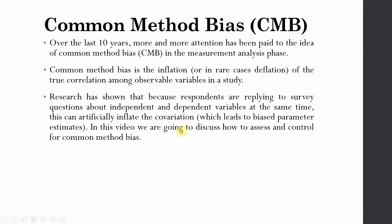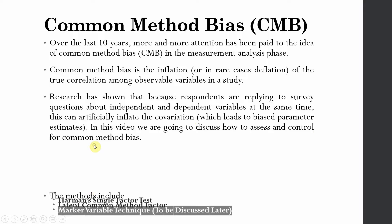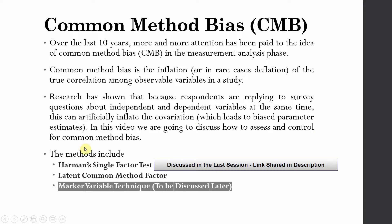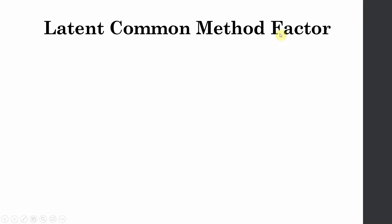In this video we are going to discuss how to assess and control for common method bias. The methods include Harman's single factor test and latent common method factor. There is another method — the marker variable technique — that will be discussed later. The latent common method factor is one of the most used methods to assess common method bias.